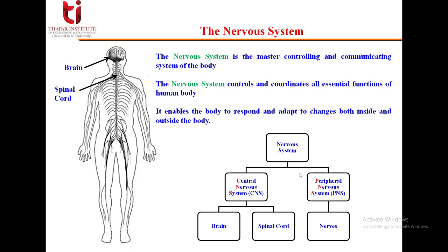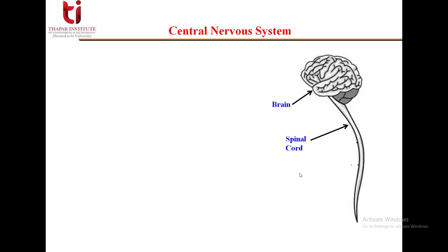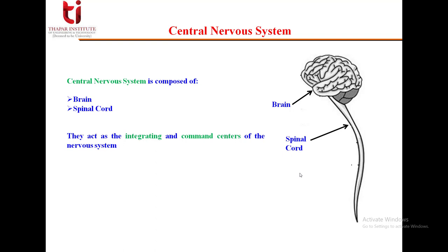The peripheral nervous system constitutes different nerves. As we have seen, the central nervous system — which comprises the brain and the spinal cord — acts as the integrating and command centers of the nervous system.